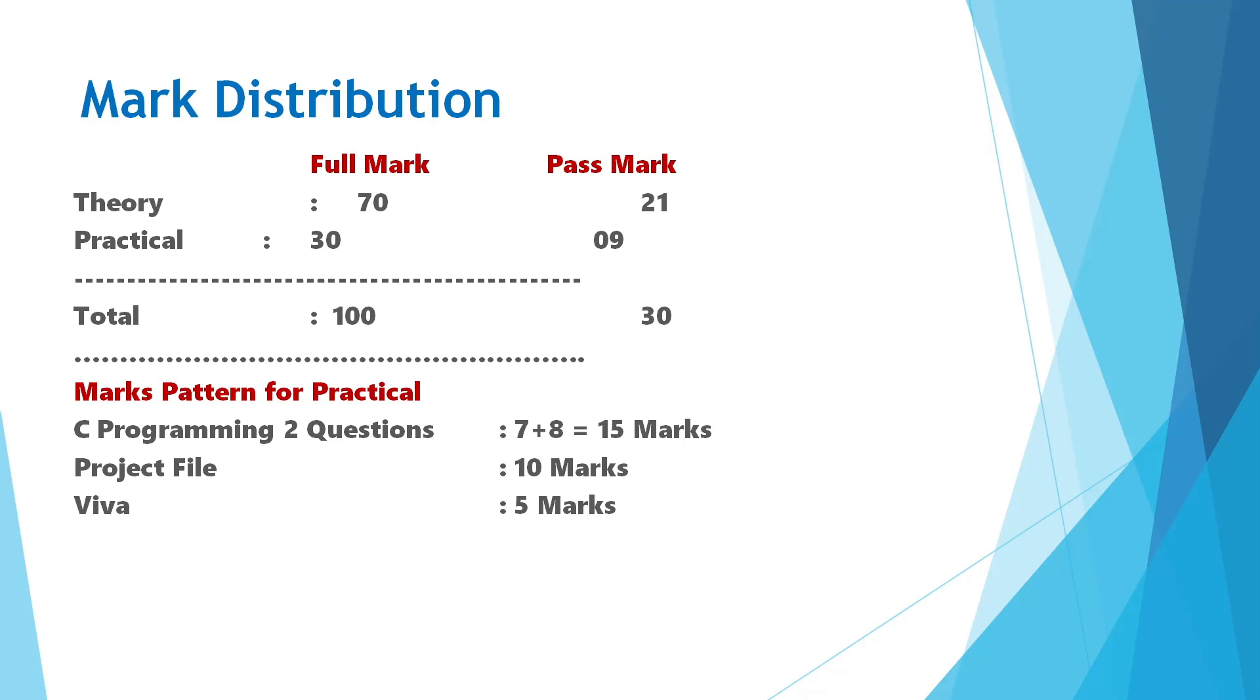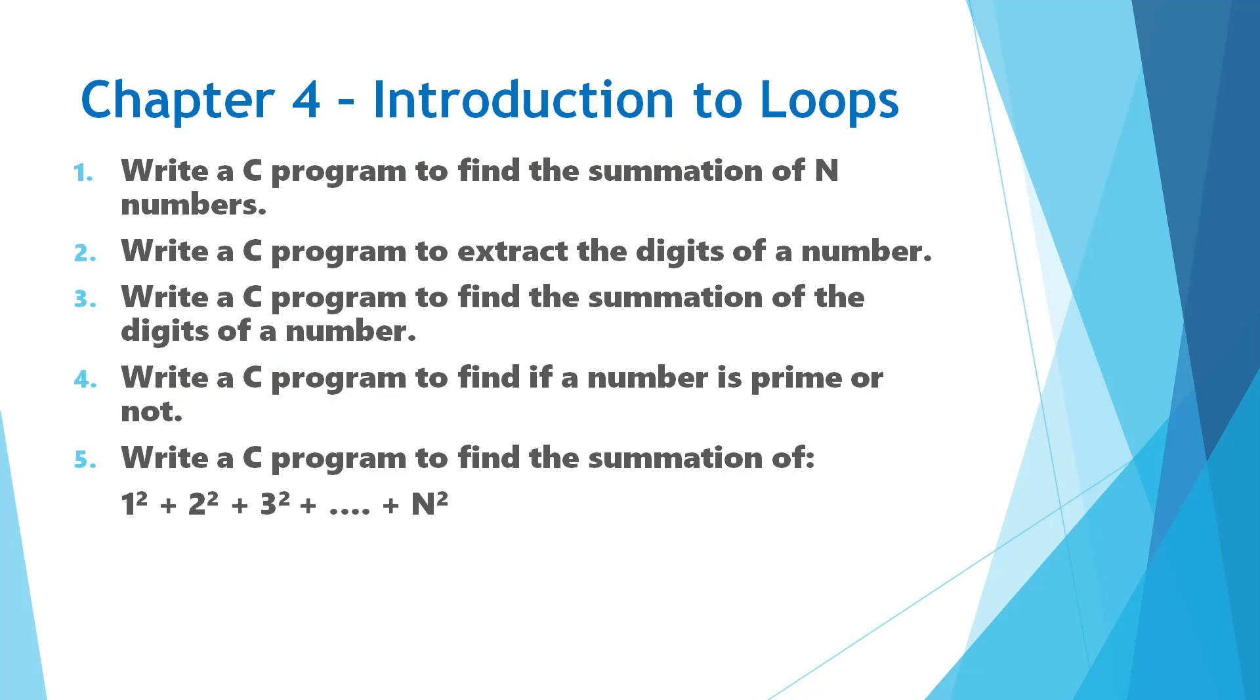Now let's see some important questions chapter-wise. From Chapter 4, you will need to see these questions: find the summation of N numbers, extract the digits of a number (this is very important), then summation of the digits of a number. Questions two and three are almost the same, only one or two lines are different, so if you can do one program, you will easily be able to do the other. Prime number program is also very important. Questions one and five are almost the same, just a little bit different. You will see the difference when you practice.